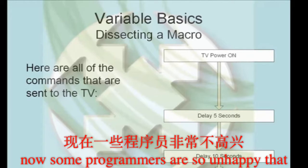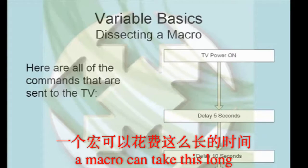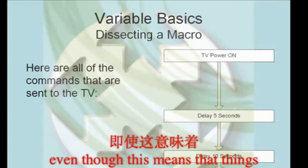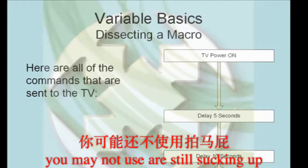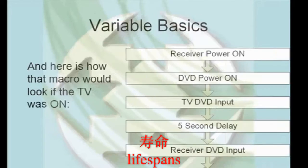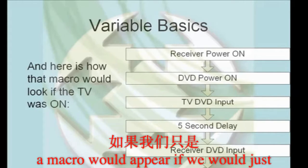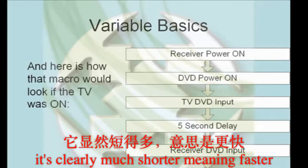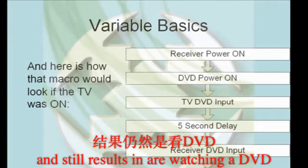Now, some programmers are so unhappy that a macro can take this long, they actually give their customers an all-on macro to turn on everything in the system, even though this means that things you may not use are still sucking up electricity and shortening their lifespans. Of course, we can also look at how a macro would appear if we would just ensure the TV was already on. It's clearly much shorter, meaning faster, and still results in our watching a DVD.